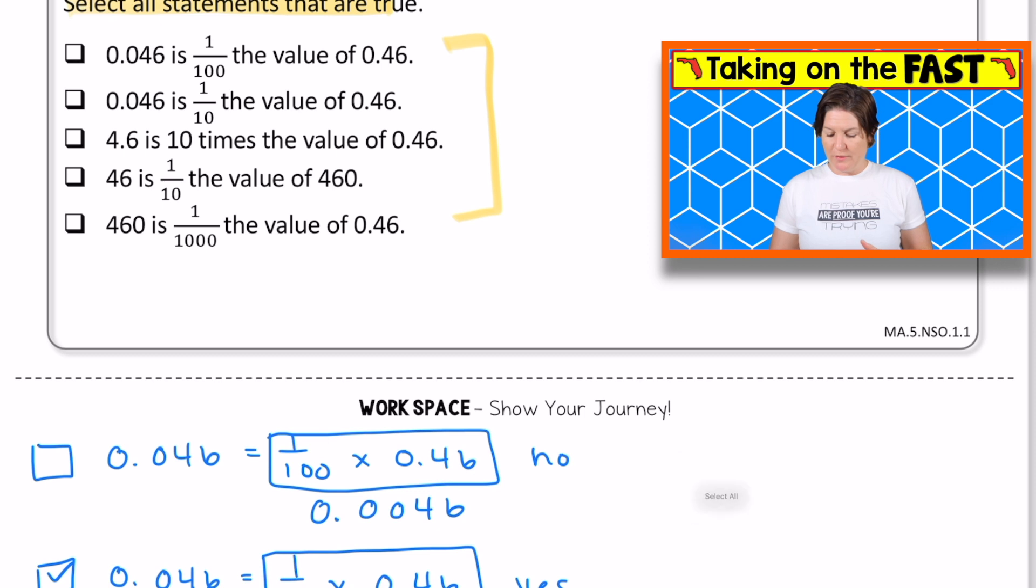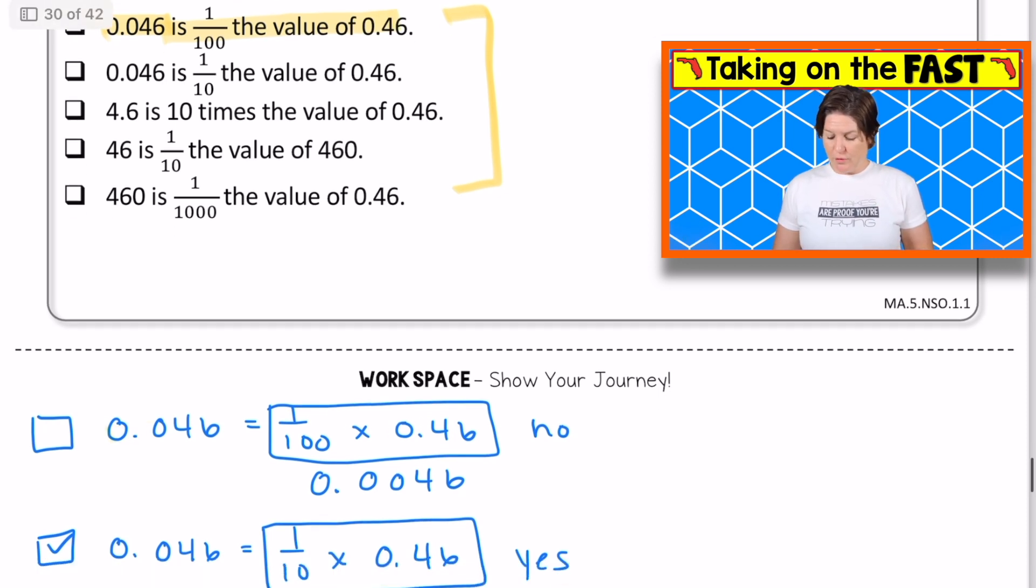For the first one, we've got 0.046 is 1/100th the value of 0.46. So 0.046 is 1/100th of 0.46. Well, when I multiply, when I found 1/100th of 0.46, that would actually be this number, which does not match. So I said no.